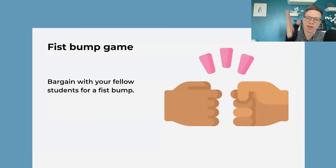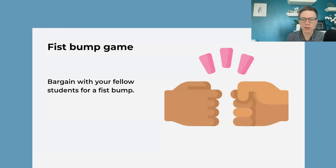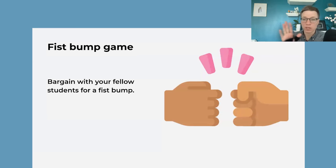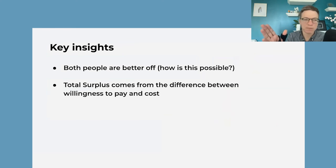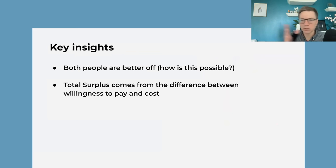This is a simplified version of the game where half the class are producers and half the class are consumers. You have the consumers close their eyes as you assign the cost to the producers — it's $10. You have the producers close their eyes and you assign the value to consumers — it's $100. The consumers are going to buy a fist bump; the sellers are going to sell a fist bump. The seller's cost is $10 and the buyer's willingness to pay is $100. They shouldn't reveal their willingness to pay or their cost to the other party, and they go around the class and try to bargain and buy or sell one fist bump. Both parties should be able to come to a trade, reaching a price between $10 and $100 where they're both better off, because of the gap between the willingness to pay and the cost.